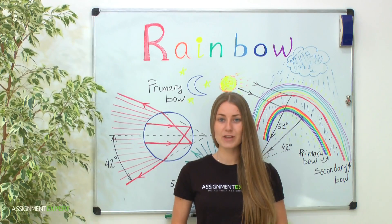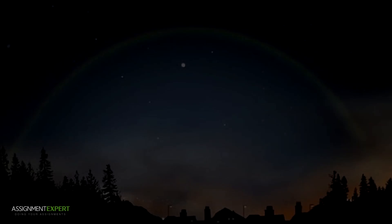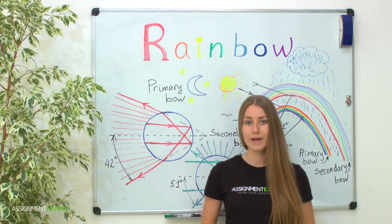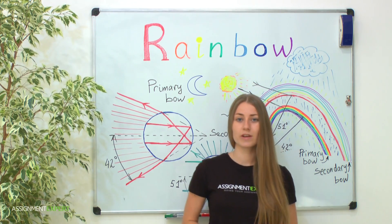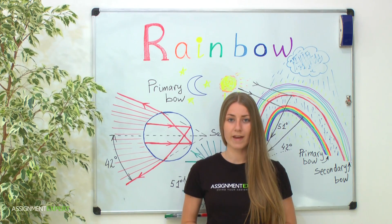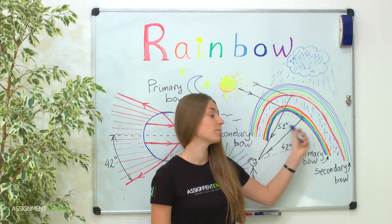What about the formation of a rainbow at night? Well, it doesn't actually matter whether it's night or day — the only important factor is the presence of light to create dispersion. Moonlight, which is actually reflected sunlight, can be dispersed on raindrops in the usual way and creates a beautiful rainbow.